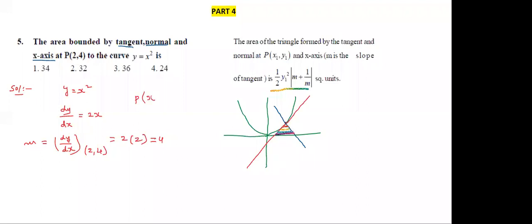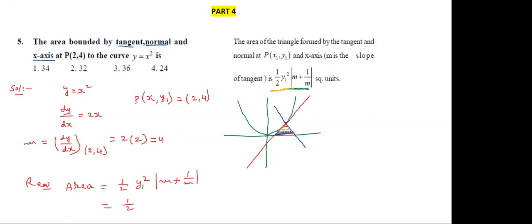Required area using the shortcut formula: A = ½ × y₁² × |M + 1/M|. y₁ = 4, so y₁² = 16. M = 4, so M + 1/M = 4 + 1/4. Taking LCM: numerator = 16×17, denominator = 2×4 = 8. So the answer is 34. The first option is correct.